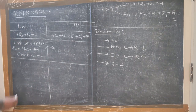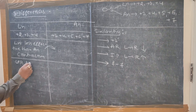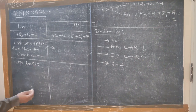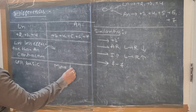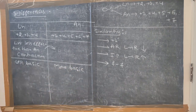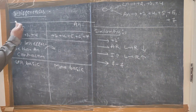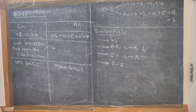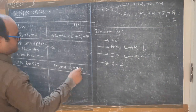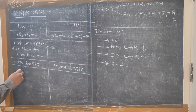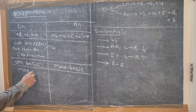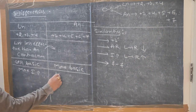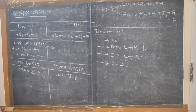Third difference: lanthanides are less basic, while actinides are more basic. Going from lanthanides to actinides, atomic radius increases, ionization potential decreases, and basic strength increases. Lanthanides have more ionization potential; actinides have less ionization potential.